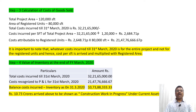Step 4: Closing inventory. Total cost incurred is ₹32 crore 21 lakh 65,000 less cost recognized in P&L for 31st March 2020, which is ₹21 crore 47 lakh 76,667. The balance — ₹10 crore 73 lakh 88,333 — represents cost incurred but not yet recognized in P&L, and this will go as inventory of unfinished goods (unfinished flats) in the balance sheet under current assets.